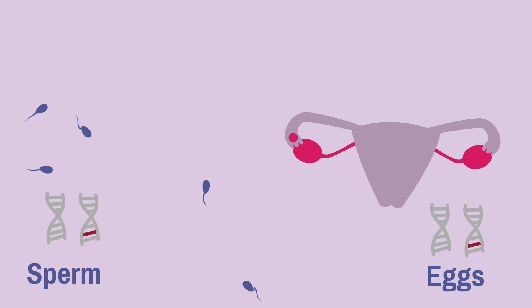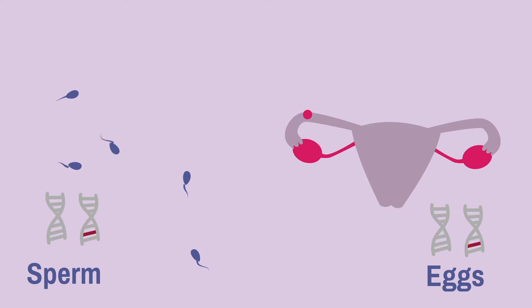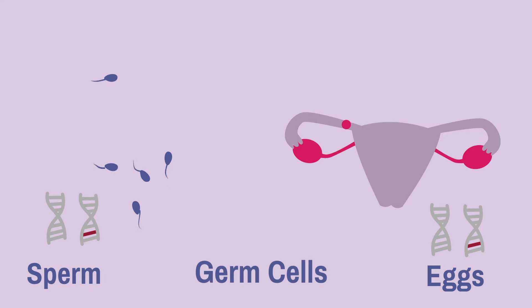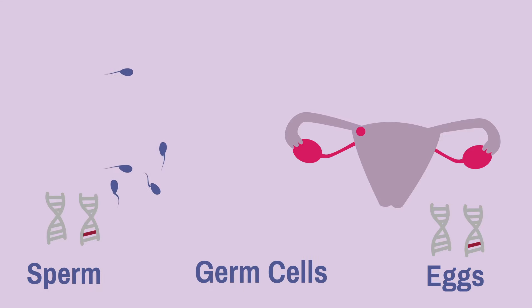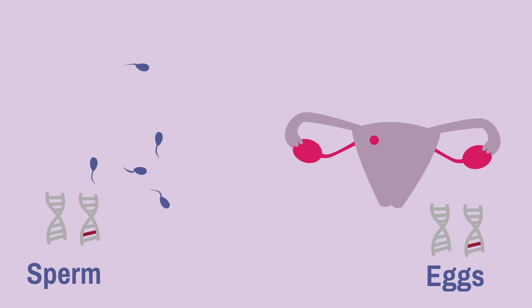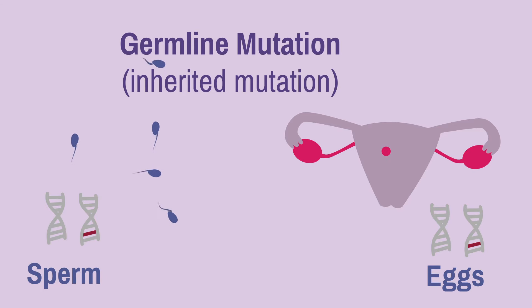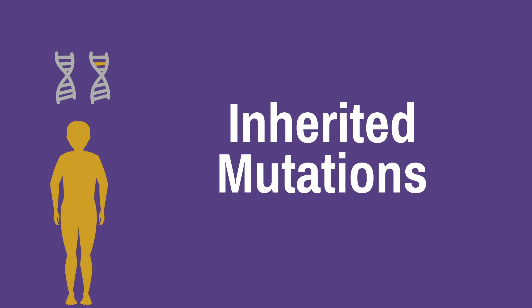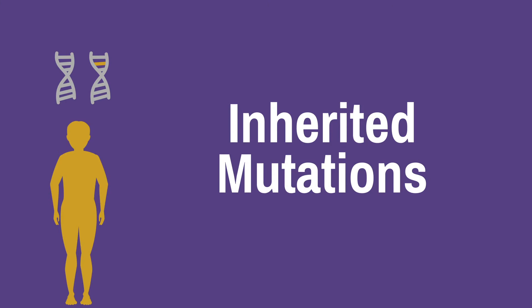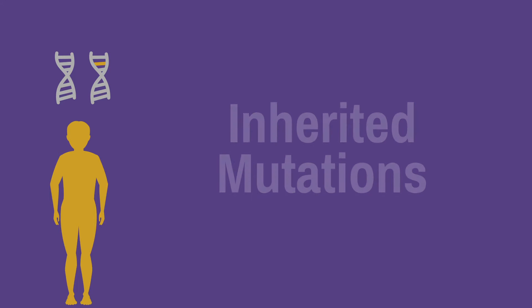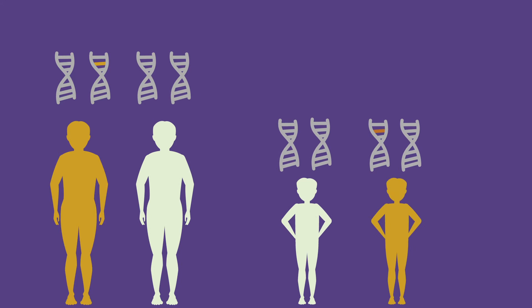Only acquired mutations that occur in reproductive cells — the eggs and sperm — may be inherited by children. Eggs and sperm are also called germ cells. Mutations in the eggs or sperm may be passed down to children and are called germline or inherited mutations. If you are born with an inherited mutation, it will be present in all the cells in your body. If a parent has a mutation, each biological child has a 50% chance of inheriting that mutation.